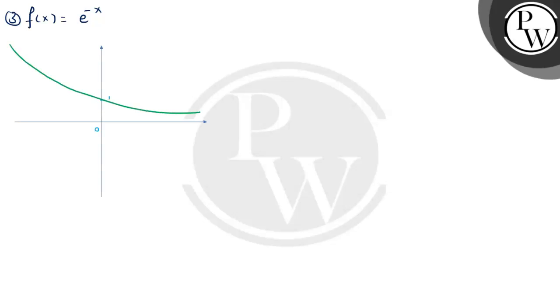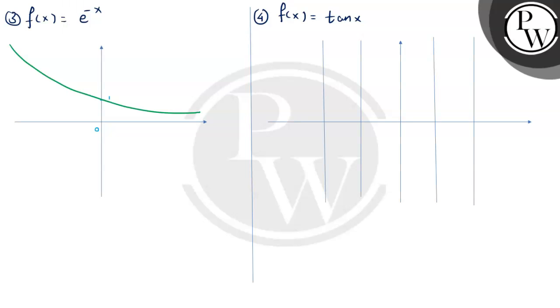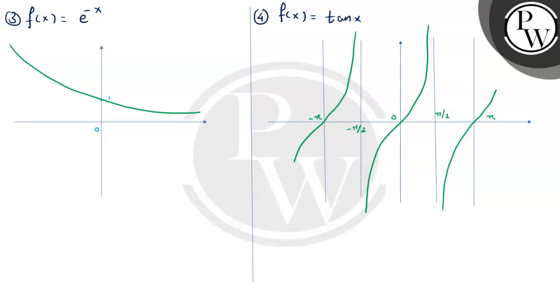Now let's look at the graph of f(x) equals e raised to minus x — the graph shows a smooth, decreasing exponential curve. Next is the graph of f(x) equals tan x. As you can see, the function is not defined at points of the form (2n+1)π/2, for example π/2 and minus π/2, so these points are not in the domain.